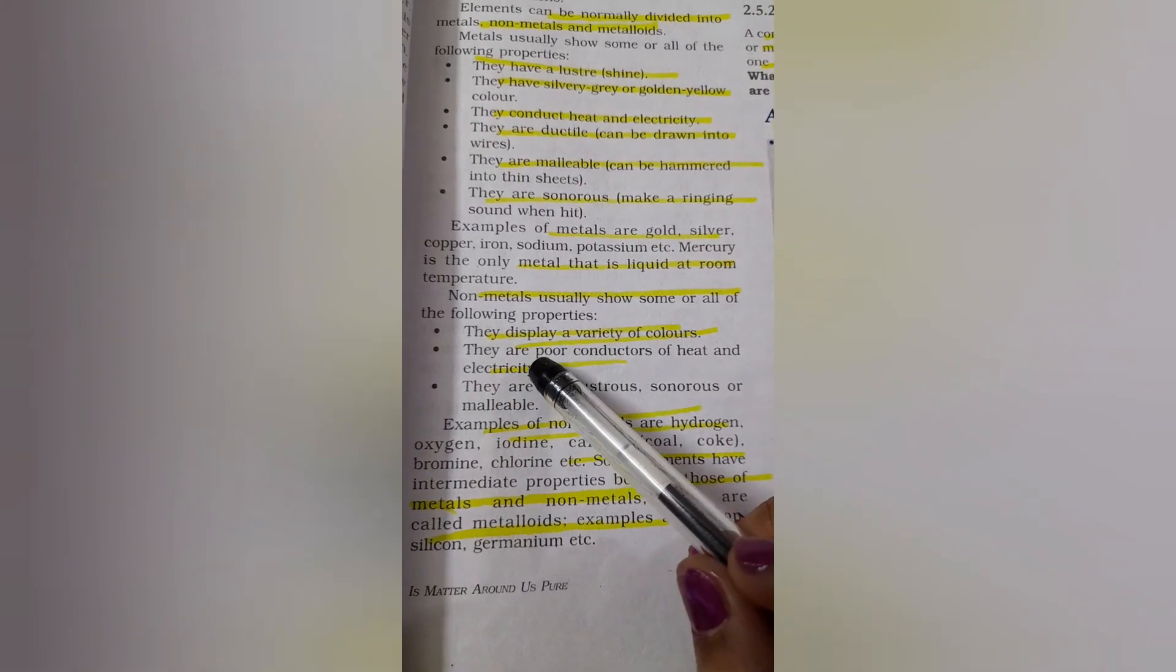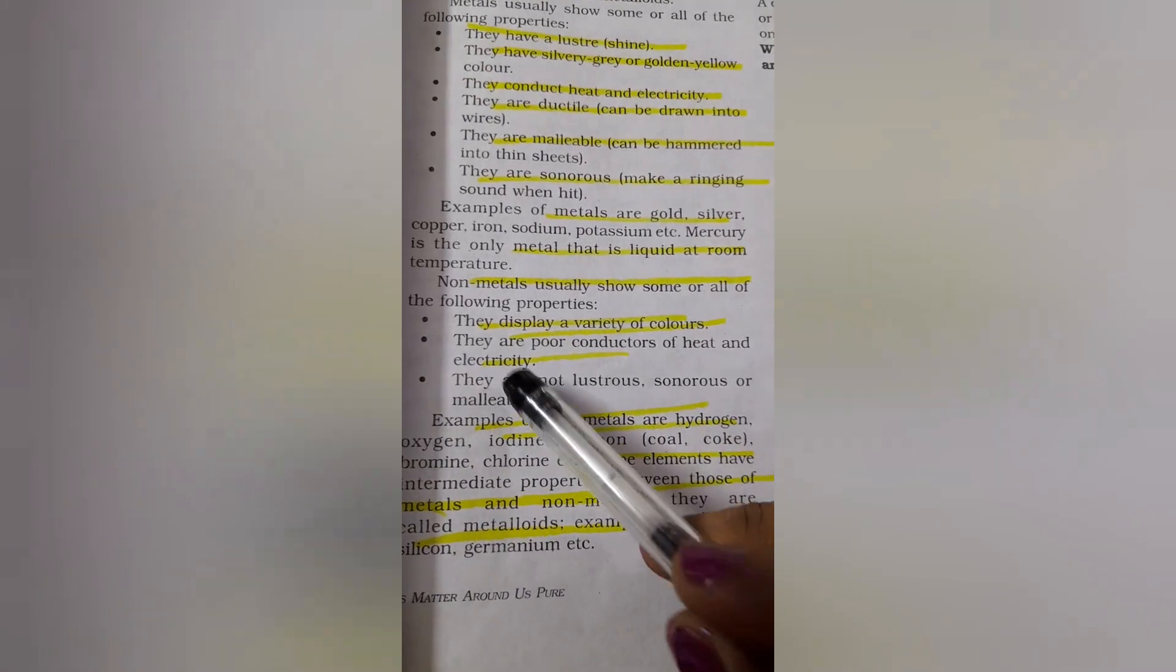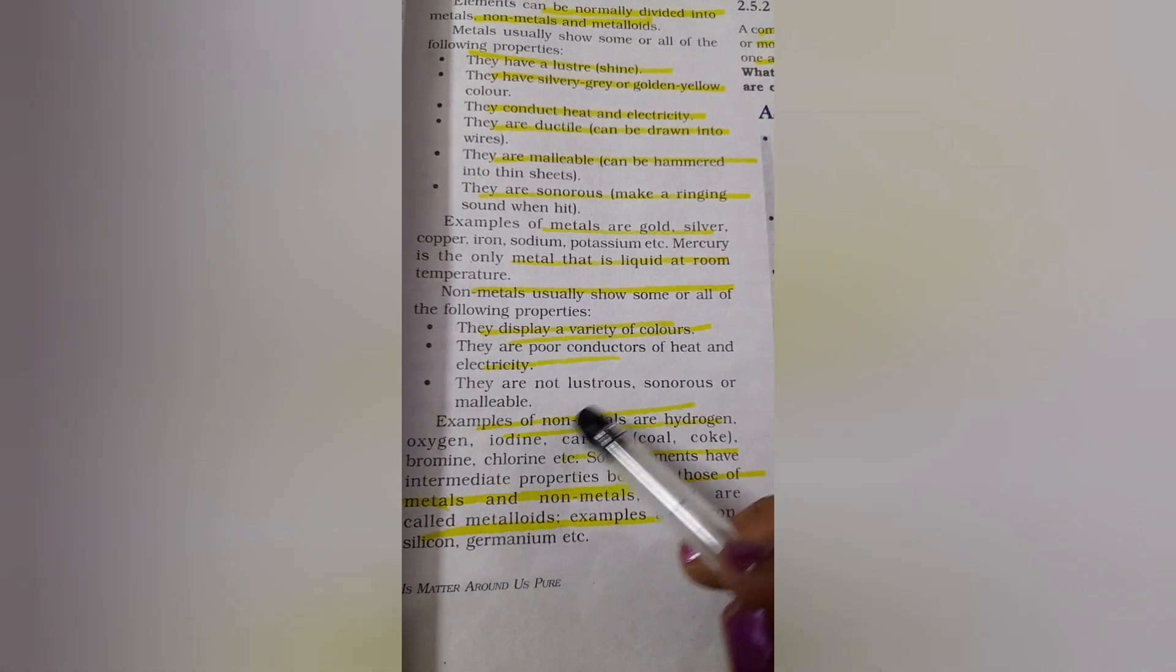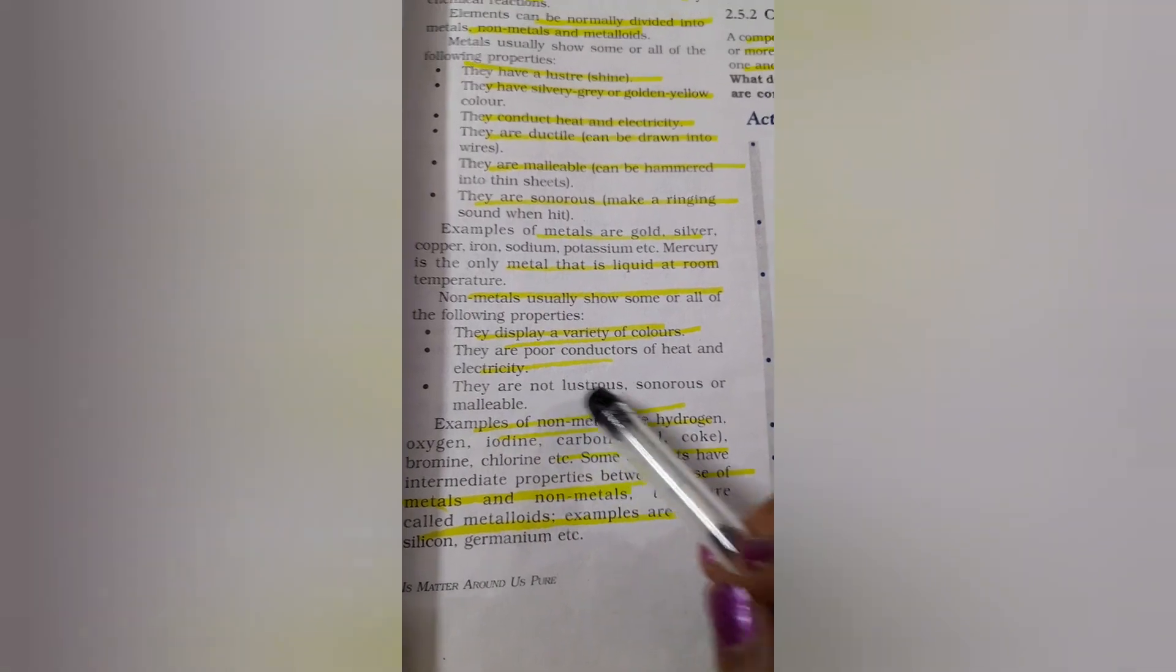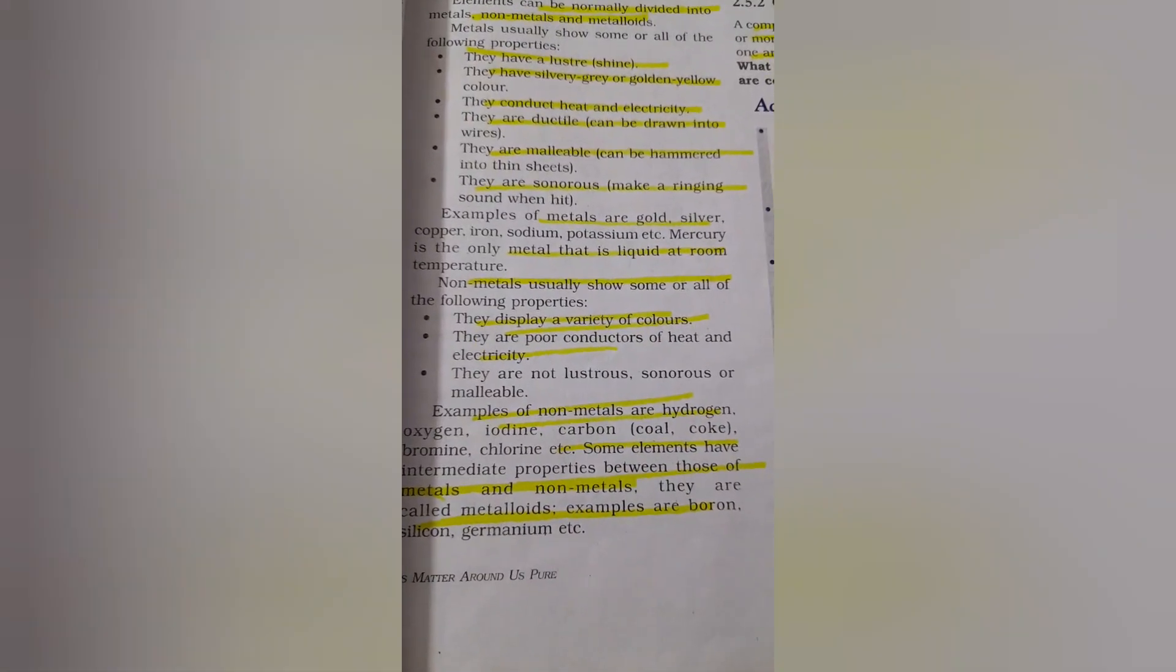Coming on to non-metals, they show some or all properties which are given here. They show a variety of colors. They do not conduct heat and electricity or are poor conductors of heat and electricity. They are not lustrous, sonorous or malleable, it is opposite to that of metals.